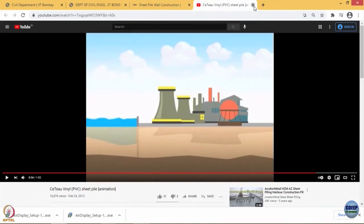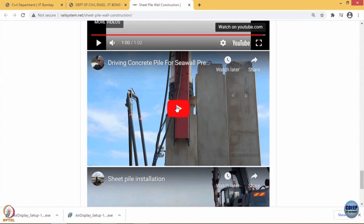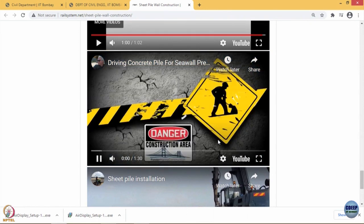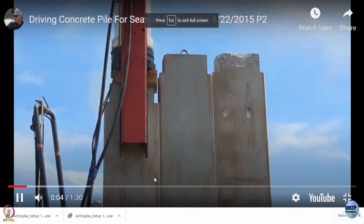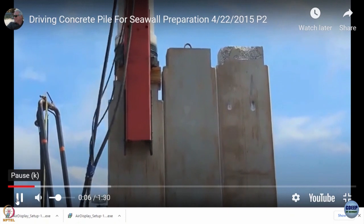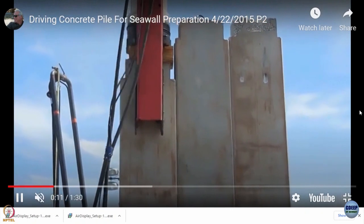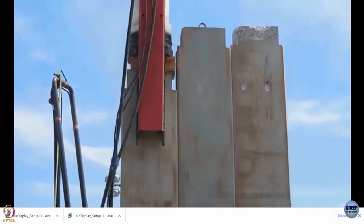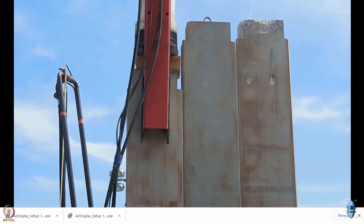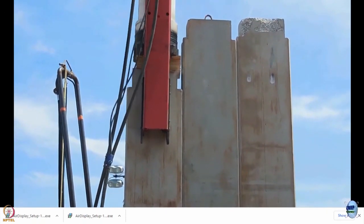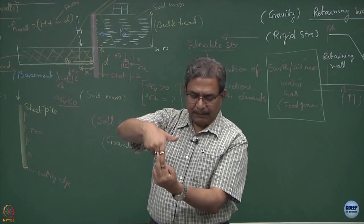Let us move on to some other examples of sheet pile. I think this is a concrete pile which is being driven into the sea wall and I hope this shows how the sea wall is being created. So, the whole sheet pile has been held between the calipers and these calipers are pushing the pile deep inside the ground.